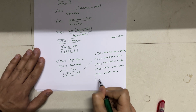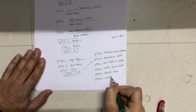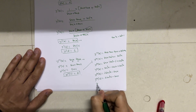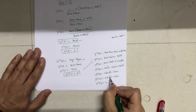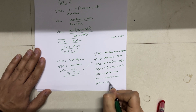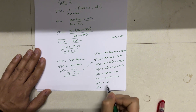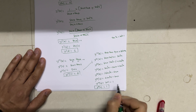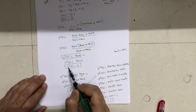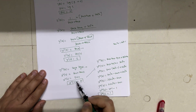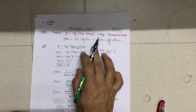Now evaluate at x = 0: y'''(0) = 2·sec³(0) − sec(0) = 2·(1)³ − 1 = 2 − 1 = 1. We now have all four values: y(0) = 0, y'(0) = 1, y''(0) = 0, y'''(0) = 1. We can now substitute these into the Maclaurin series.